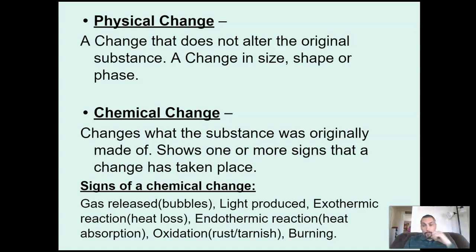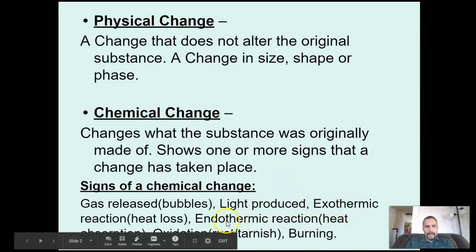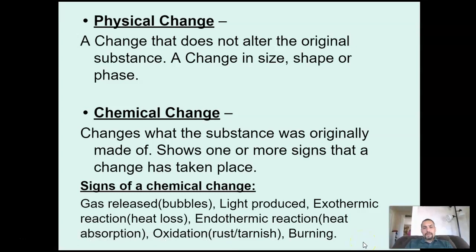So for example, we put a metal into an acid, we can see gas bubbles being released. So there were no bubbles before, when we mix the two, now there's bubbles. Light produced - same thing, there was no light showing up, we mix them, now there's light. Exothermic reaction, so it loses heat - it's giving off heat when it does that. So if you feel it, it feels warm to the touch.